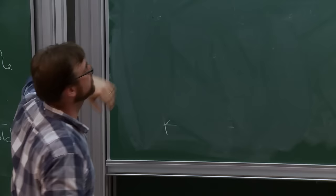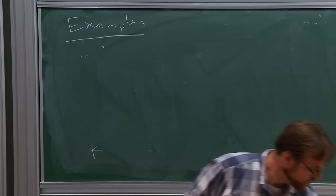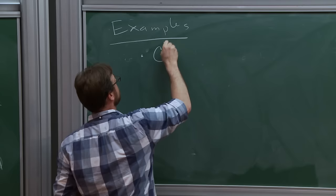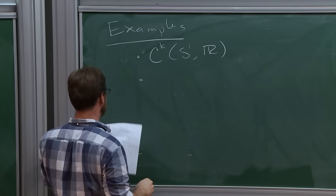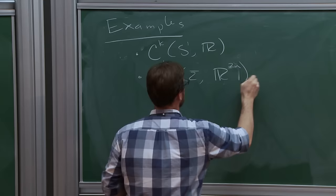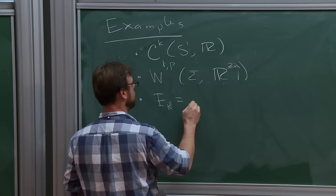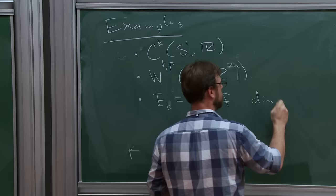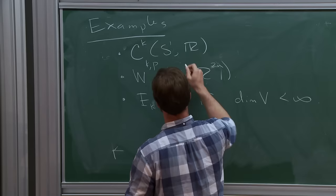Before describing these properties further, it's probably good to see some examples. First: C^k maps from S1 into ℝ — real valued maps from the circle of regularity C^k. Second: maps of Sobolev class W^{k,p} from Σ into ℝ^{2n}, with p > 2, where Σ is a compact closed Riemann surface — the sort of things you would want for Gromov-Witten. Third: E_k equal to V for all k if the dimension of V is finite.